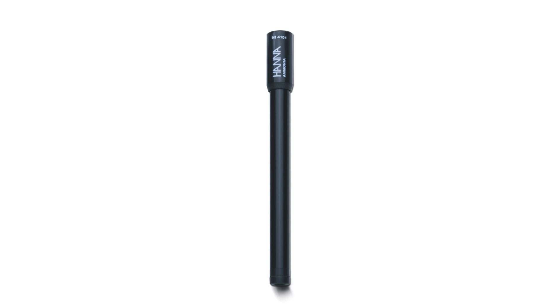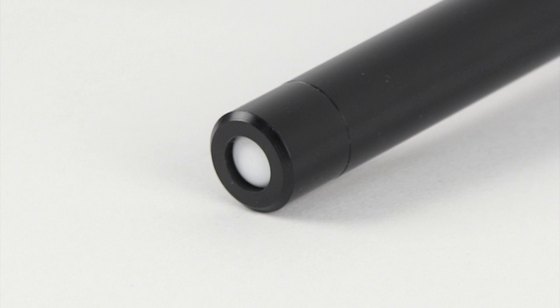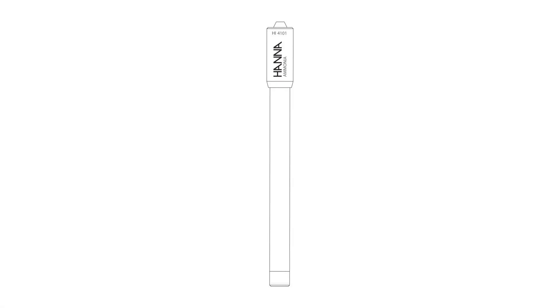The HI4101 ammonia ISC is a gas-sensing electrode. Ammonia gas diffuses through a selective PTFE membrane and changes the pH of a thin layer of electrolyte between the membrane and internal pH sensor. This change in pH corresponds to the ammonia concentration in the sample.